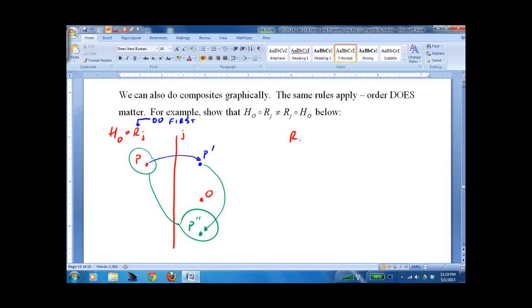So now let's do reflection about j across j dot half-turn about o. We want this to look exactly the same. Or as close as we can make it. Put our o out here somewhere. Put our p right about there. And again, I cannot overemphasize it. Do this one first.